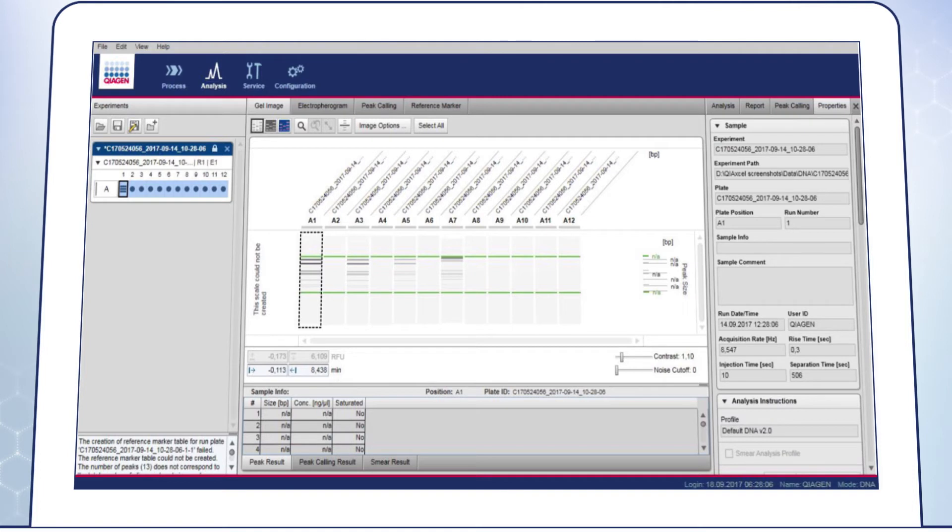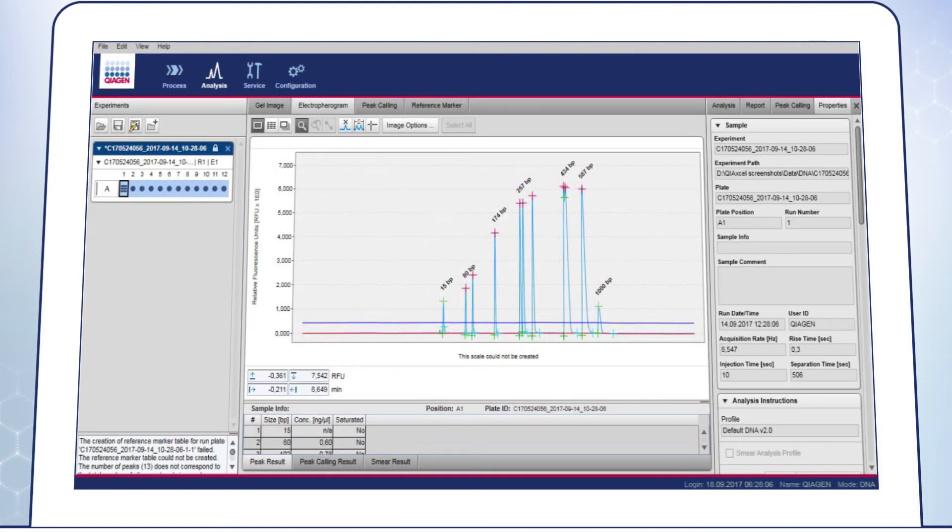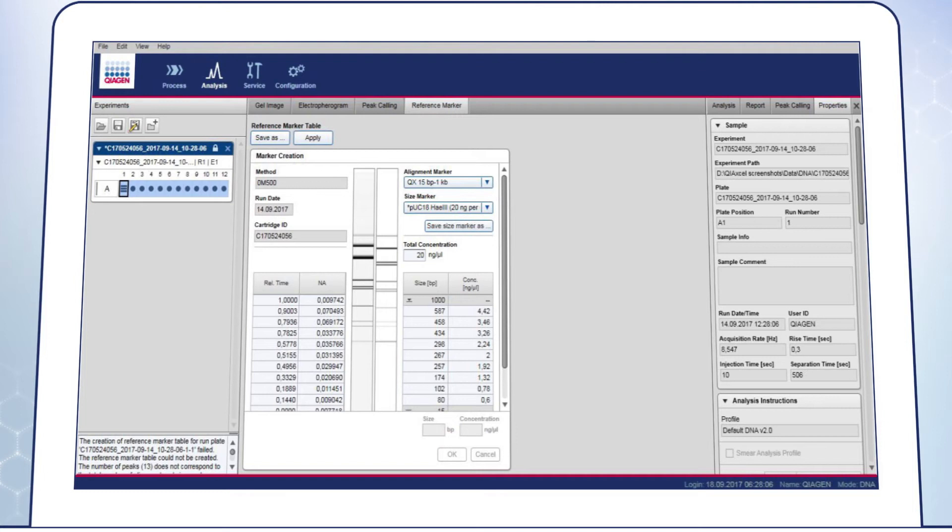Additional information can also be found under the Properties tab. To see the peak positions, go to the Electroferrogram view. Here the peaks can be seen in more detail. Under the Reference Marker table, when selecting the size marker position, the reference marker can be created and saved. If not yet done in the profile when starting the run, insert the size marker type and total concentration. Click on Apply to implement the size marker to obtain the concentrations and size calculations.